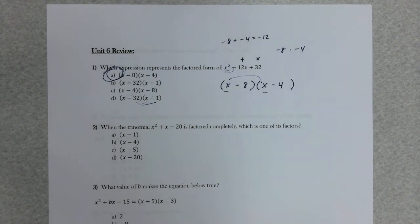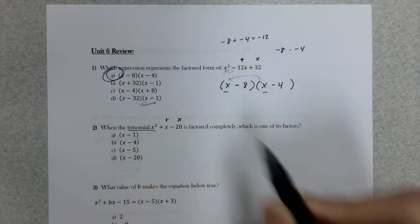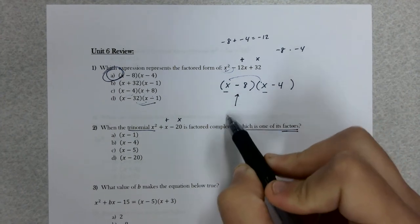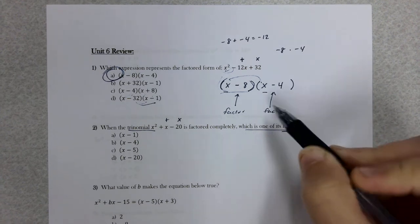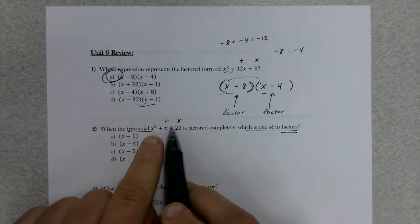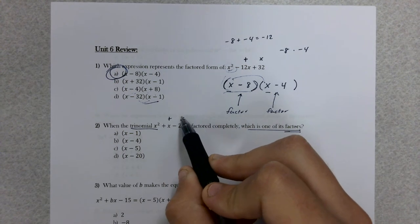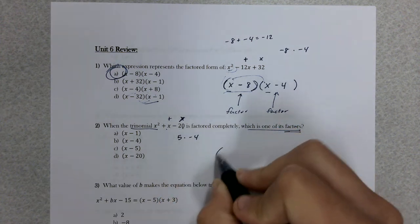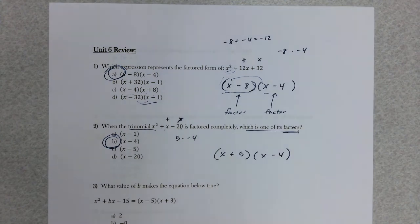Number two, same idea. Check GCF first but it's a 1. It's a trinomial, so we're focused on what multiplies to give you negative 20 and adds to give you 1. They say which one is one of its factors. The method we learned with a trinomial: try to find the factors of negative 20 that could add to give you 1. That seems to be positive 5 and negative 4. Letter B, that x minus 4, is there.